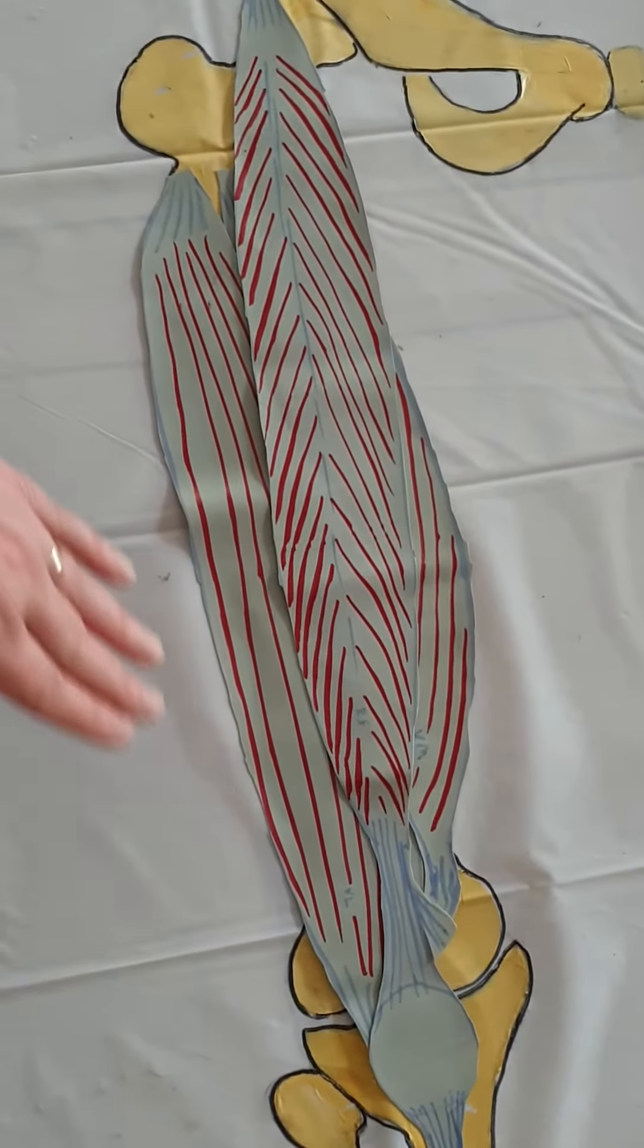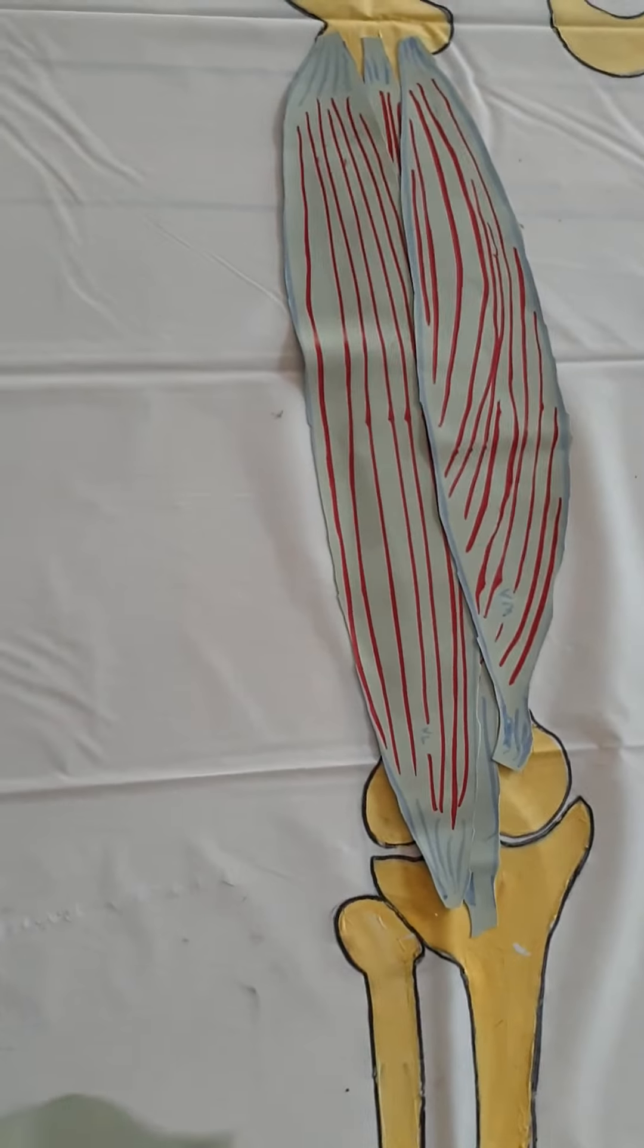So this is your rectus femoris. And like all of the quadriceps muscles, its action is to extend the knee, to straighten the leg. And when eccentrically contracted, it also helps to control knee flexion. So if I just take that rectus femoris out, you can see what's behind it, which is sometimes difficult to visualize in books.